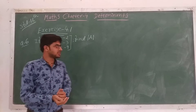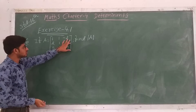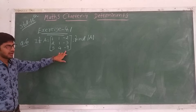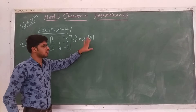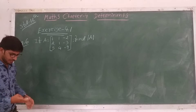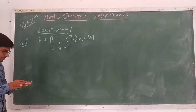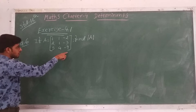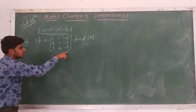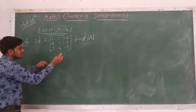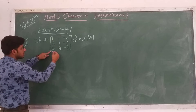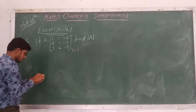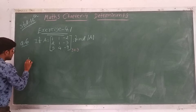If A is equal to the matrix: row 1: 1, 1, -2; row 2: 2, 1, -3; row 3: 5, -9, and we have to find the value of determinant of A. Here A is in matrix form but we have to find the determinant of A. It is a 3×3 order, so we can write it in determinant form. Let us start the solution.